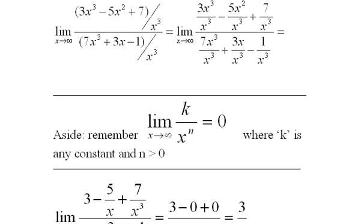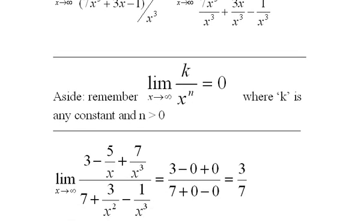Because when I start to simplify these, that expression that we were looking at a moment ago, I end up with three minus five over x plus seven over x to the third power on the top. And I end up with a similar kind of situation on the bottom, a constant seven here and three over x squared minus one over x to the third power. And each one of these little rational functions here will go to zero as x goes to infinity, and I end up with three minus zero plus zero over seven plus zero minus zero, which equals three sevenths.